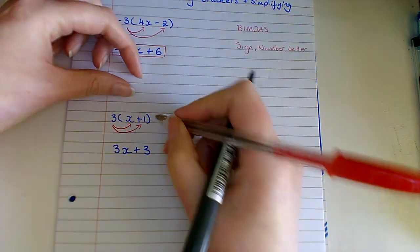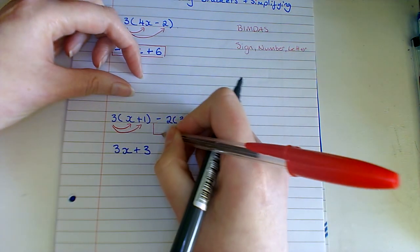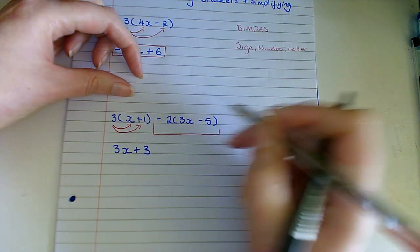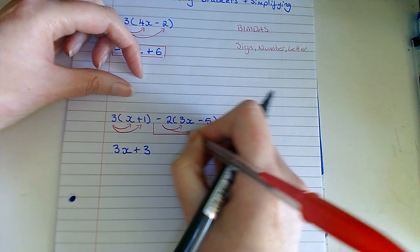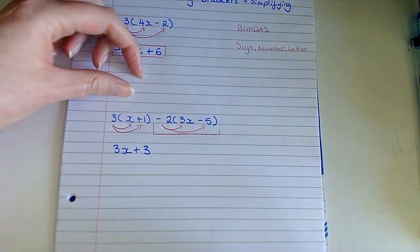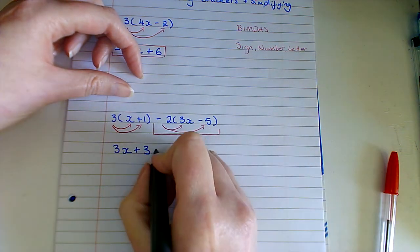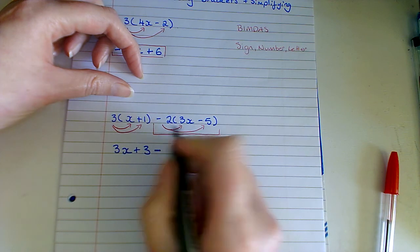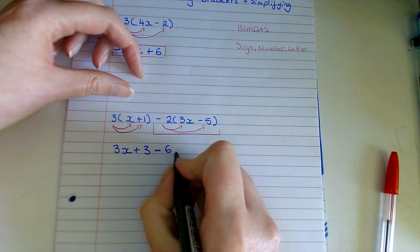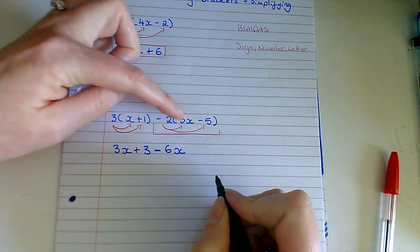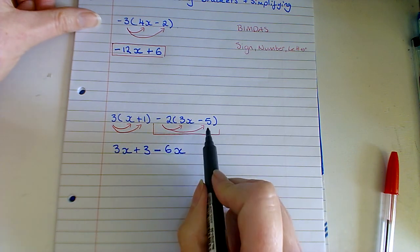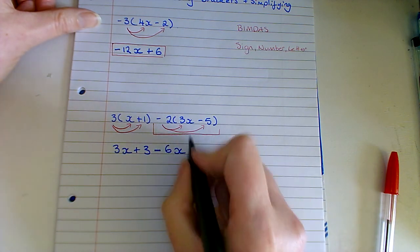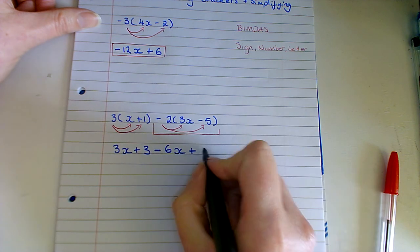Now what I'm going to do is this is essentially a second sum. But we are going to follow the same multiplying idea. So we have a minus by a plus which is a minus. 2 multiplied by 3 which is 6. And then we have our letter on its own here which is x. And then we're going to do minus 2 by minus 5. So a minus by a minus is a positive. And 2 by 5 is 10.